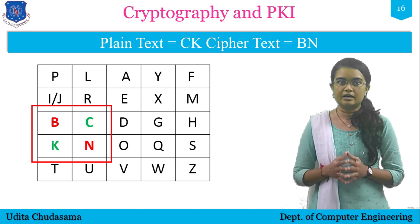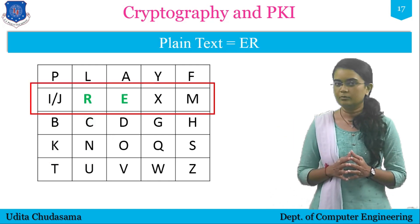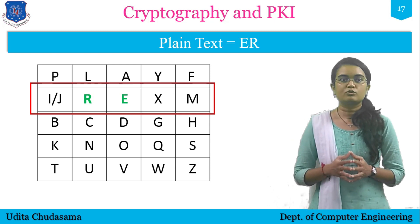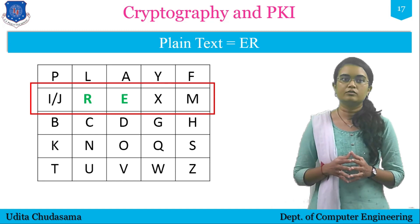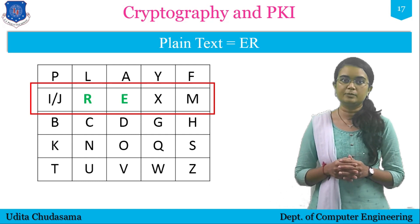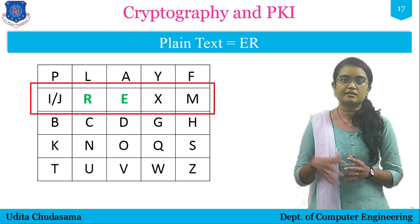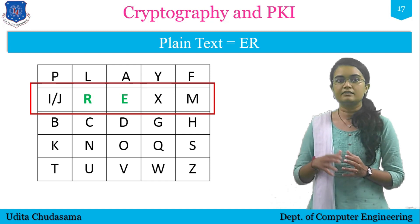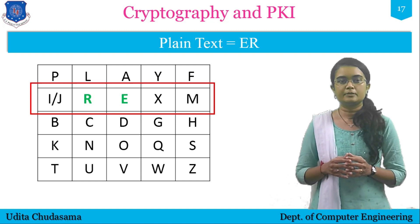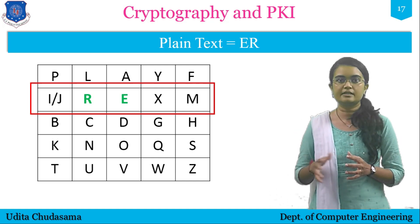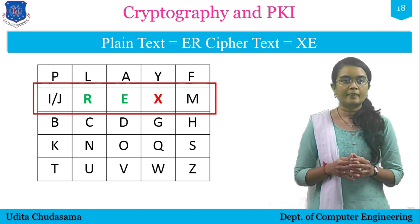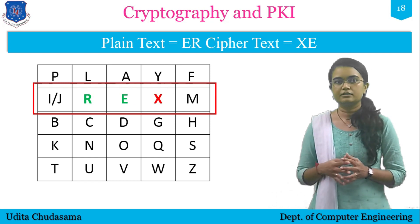Next pair is ER. We locate E and R in the matrix. E and R appear in the same row, so Rule 2 applies: each letter is replaced by the letter immediately to its right. E is encrypted as X, since X is the next character to the right of E. For R, the next right-hand character is E. So the pair ER encrypts as XE.